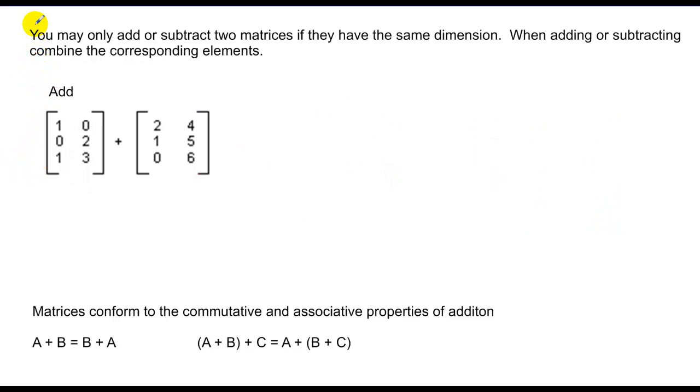When it comes to adding and subtracting two matrices, you can only do so if they have the same dimension. When adding or subtracting, you combine their corresponding elements. In this case, this is a two by three, and this is a two by three, so I can add them. When I add them, I just take and add their corresponding elements.